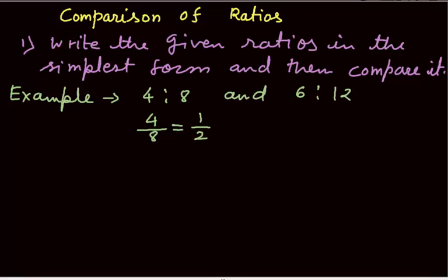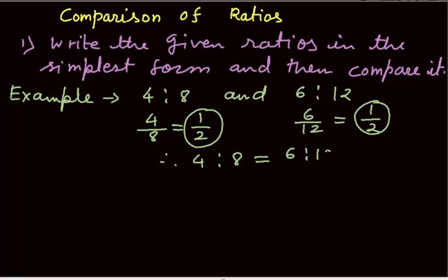Similarly, 6 is to 12 can be written as 6 over 12 and the simplest form of 6 over 12 is 1 over 2. We can easily compare that these two simplest forms are equal. Therefore, the ratios 4 is to 8 and 6 is to 12 are equal.